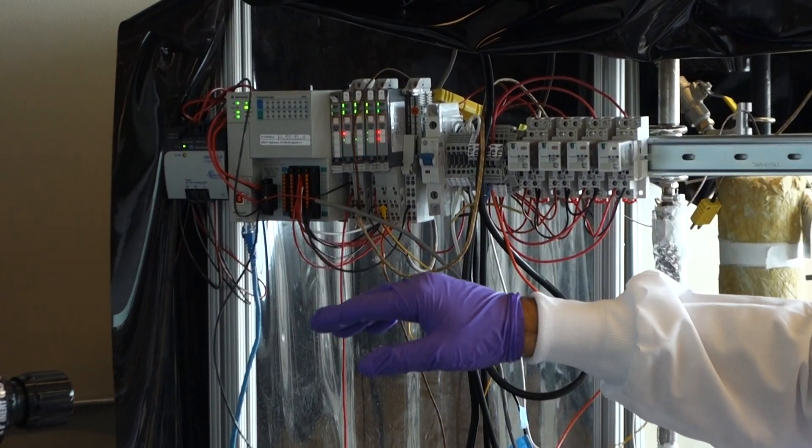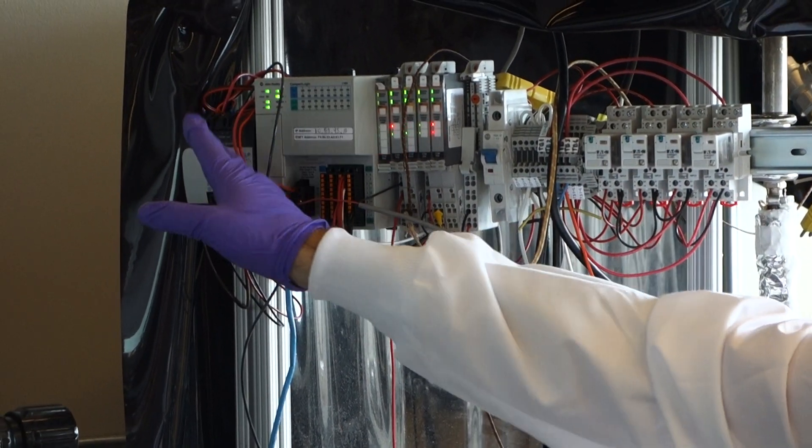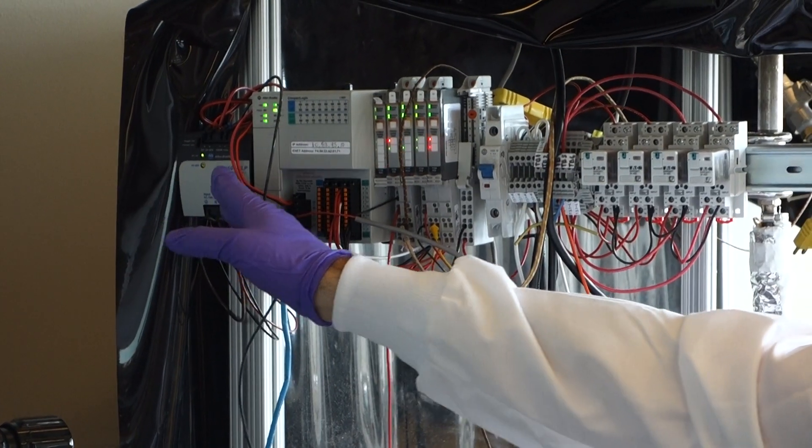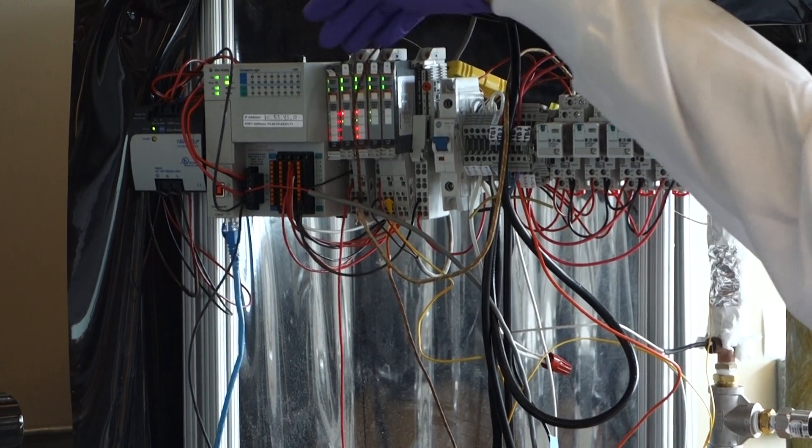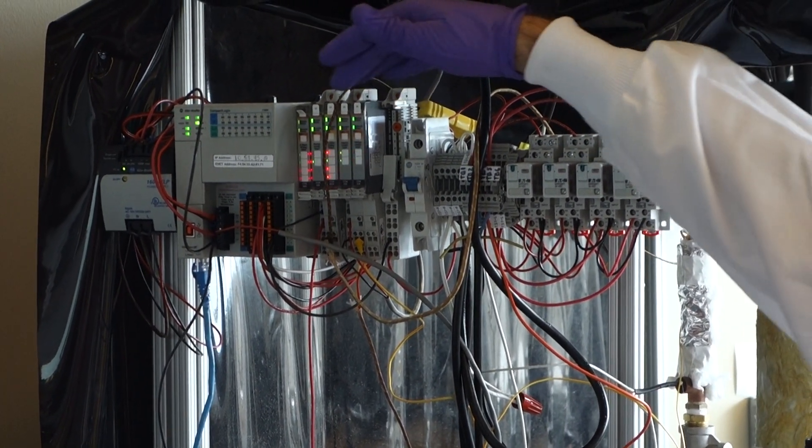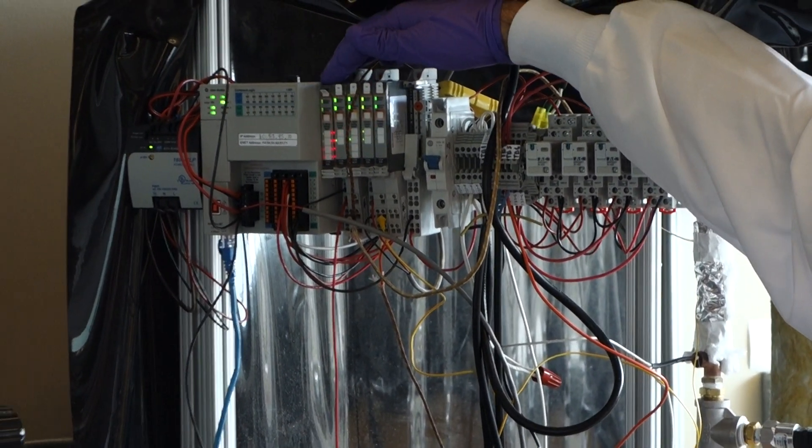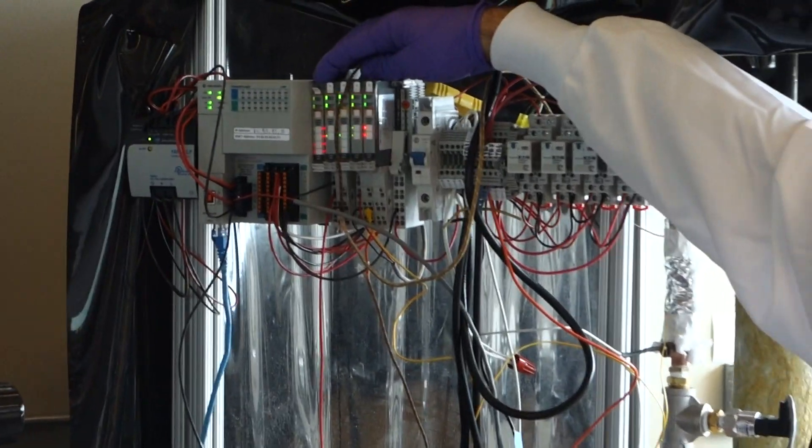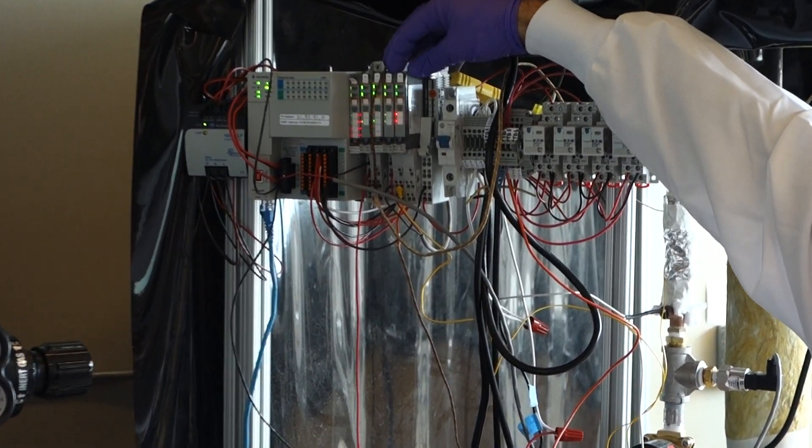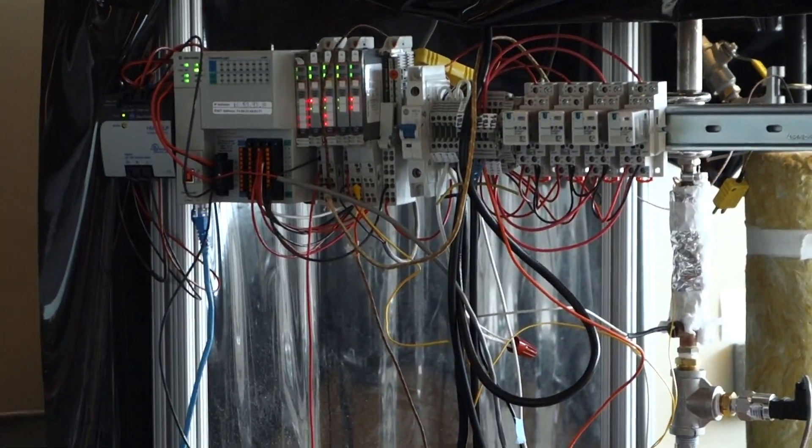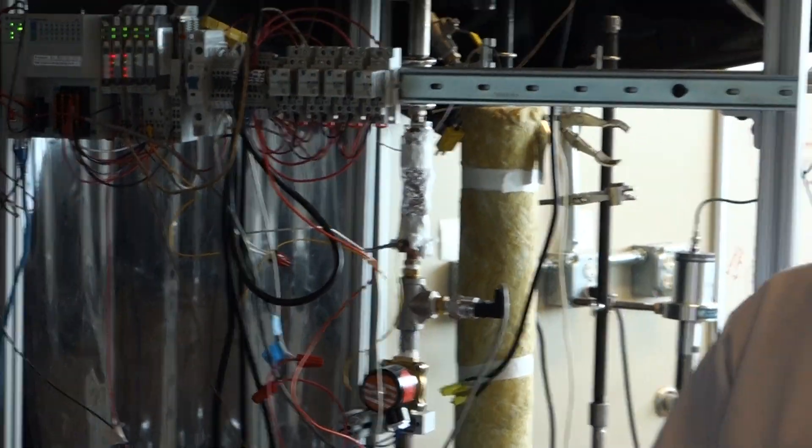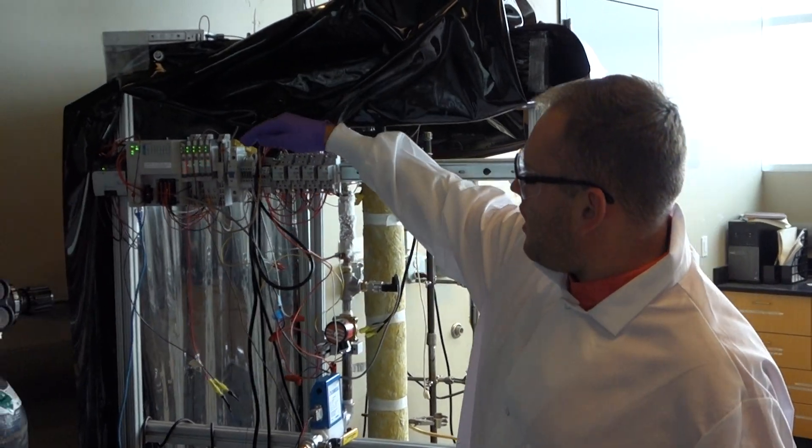Our programmable automation controller first starts with our power supply, our compact logics controller. We have several modules in which we can take in analog input, analog output, and we have three different cards that measure the temperature both internally and externally of our system.